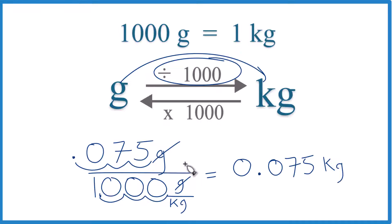So 75 grams equals 0.075 kilograms. If your teacher wants you to multiply by a conversion factor, here's how you do that.